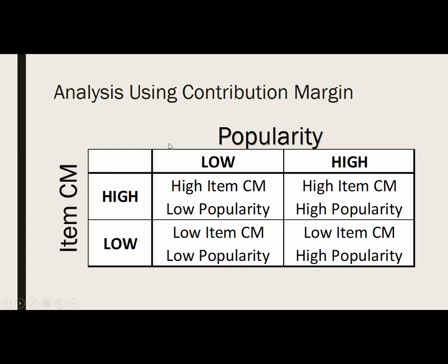When we get to contribution margin and popularity, we're looking at profitability — item contribution margin versus popularity — always comparing to the weighted average for all items. High item contribution margin means you have profitability above average, but if you're not popular, this is one of those items you'd want to increase visibility on your menu, suggest to customers, and get people to order more of — because these items are making you money but you just don't sell enough of them.